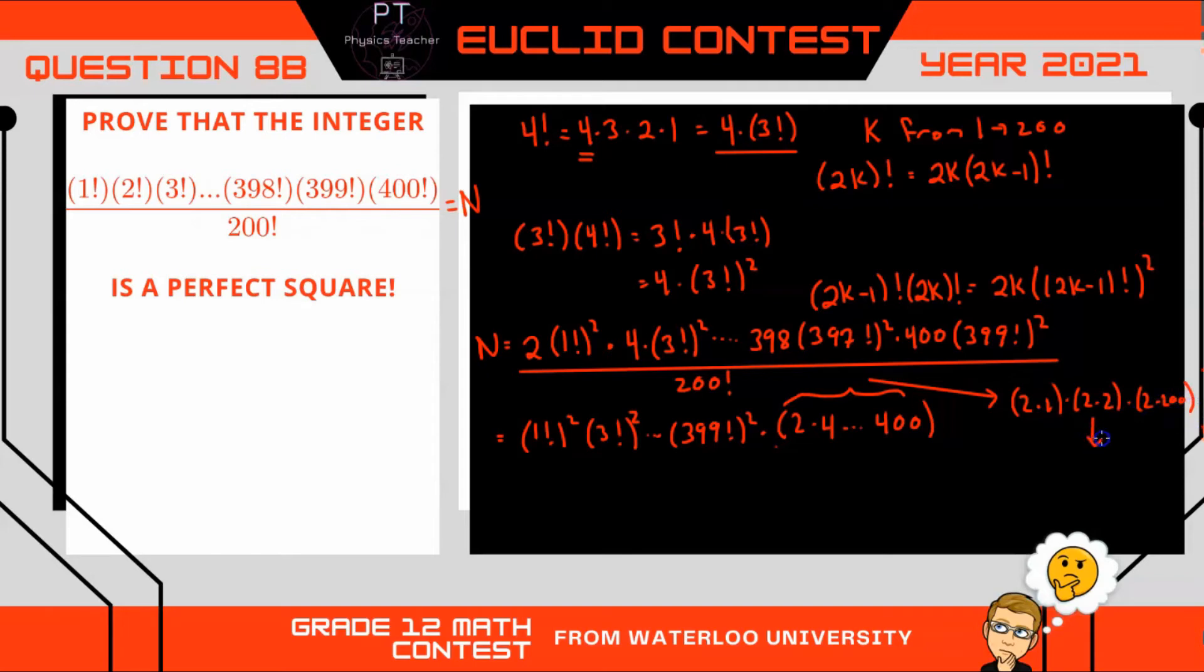And then, notice that there are 200 of these powers of 2. So this is going to reduce to 2 to the power of 200 times by, now we have 1 times 2 times 3 times 4 times 5, all the way up to 200. But that is simply 200 factorial.